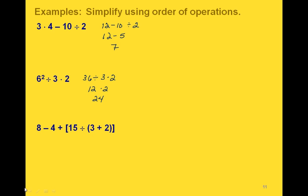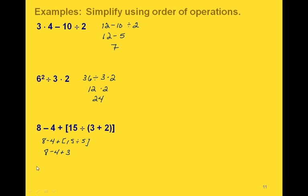This problem has lots of grouping symbols — a bracket with a set of parentheses inside it. We work in the innermost grouping symbols first: add 3 and 2 inside the parentheses to get 5. Next, work inside the brackets: 15 divided by 5 is 3. Then 8 minus 4 is 4, and 4 plus 3 is 7.